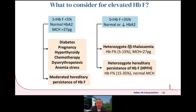For elevated hemoglobin F: if hemoglobin F is within 1–5%, with normal hemoglobin A2 and MCH above 27, possible conditions include diabetes, pregnancy, hyperthyroidism, chemotherapy, anemic stress, or moderate hereditary persistence of hemoglobin F. If hemoglobin F is 5–35% with reduction in hemoglobin A2, and the percentage is 5–15%, it could be heterozygous delta-beta thalassemia. If MCH is normal, it is more likely hereditary persistence of hemoglobin F.